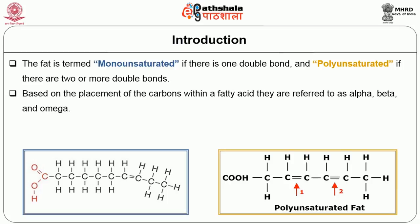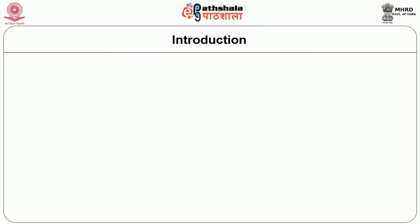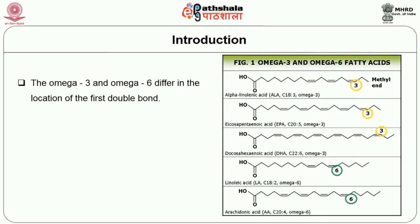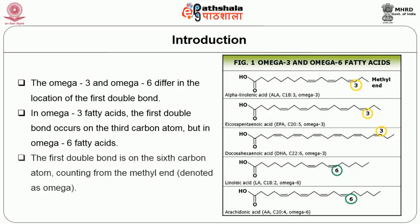Based on the placement of carbons within a fatty acid, they are referred to as alpha, beta, and omega. Alpha refers to the first carbon adjacent to the carboxyl group, beta to the second, and omega to the last carbon. In omega 3 fatty acids the first double bond occurs on the third carbon atom, but in omega 6 fatty acids the first double bond is on the sixth carbon atom, counting from the methyl end denoted as omega.